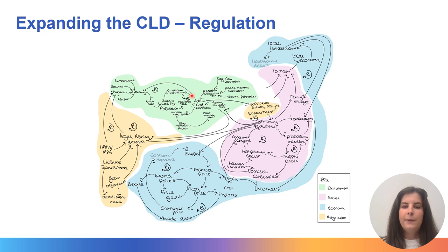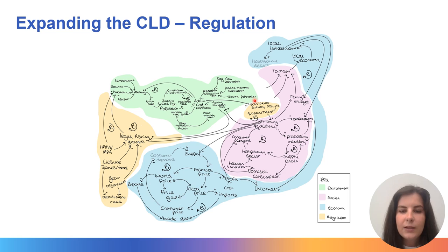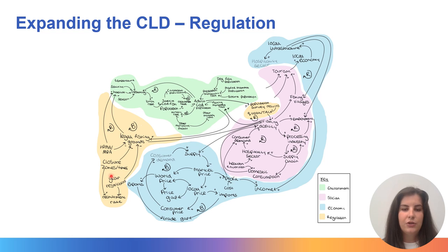The population of codfish influences the survey results, which then influences the amount of quota that's given. There are also gear restrictions which influence the legal fishing grounds. This creates balancing loops and reinforcing loops within the regulatory part of the system.